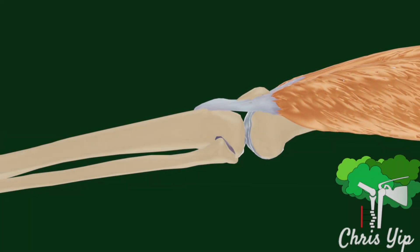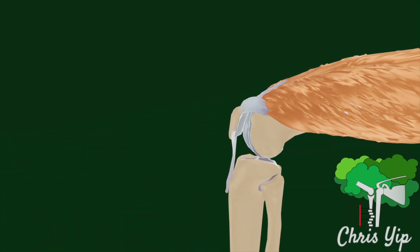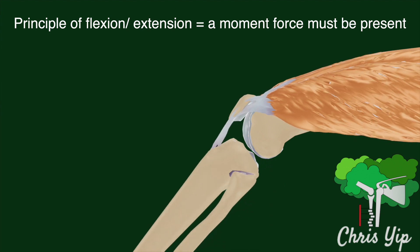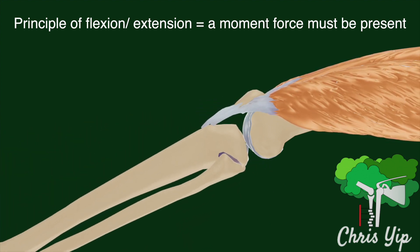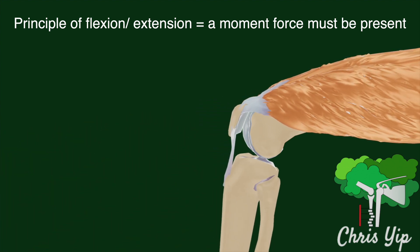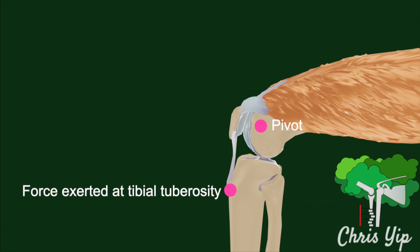In the case of knee extension, in order for the tibia to turn relative to the femur, a moment must be exerted on the tibia. Here the pivot is in the centre of rotation of the knee joint, whilst the point at which the force acts is at the insertion of the patella tendon at the tibial tuberosity.